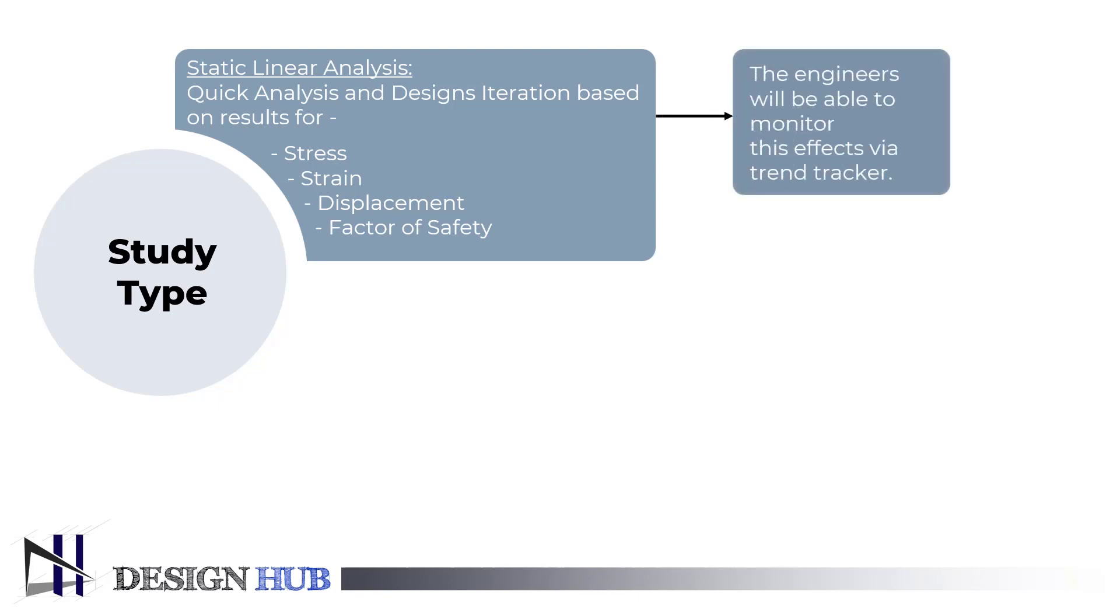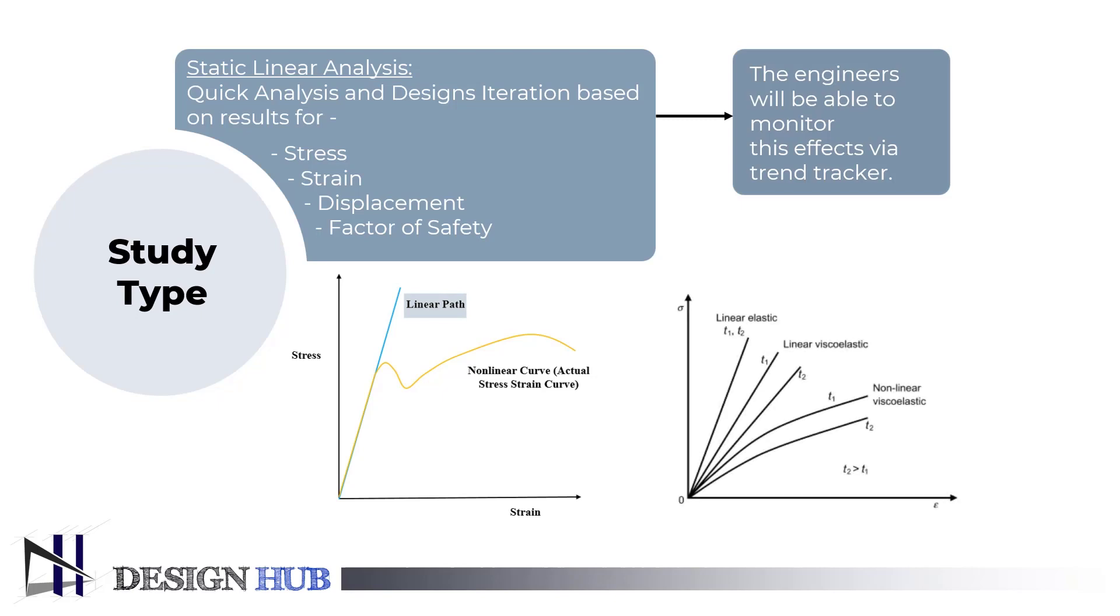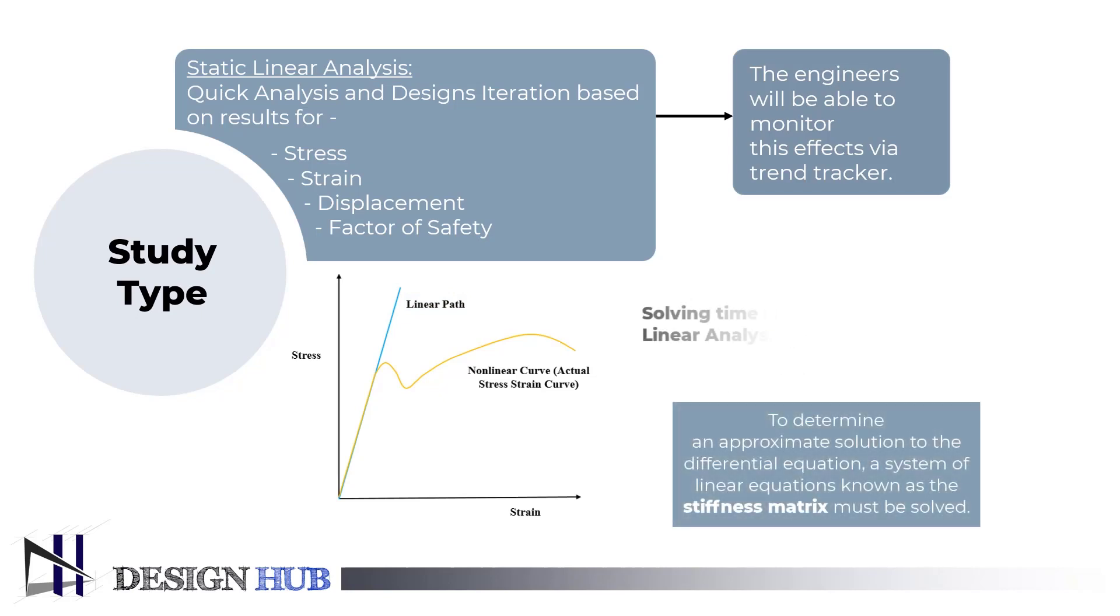In linear static analysis, the relationship between applied forces and displacements is linear. In actuality, this is applicable to structural issues where stresses stay within the material's linear elastic range. The stiffness matrix of the model is constant in linear static analysis, and the solving time is relatively quick in comparison to non-linear analysis of the same model.